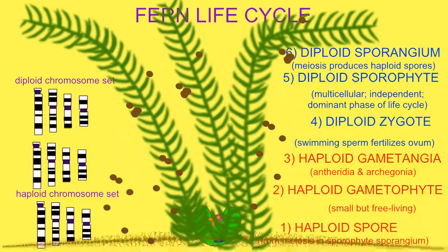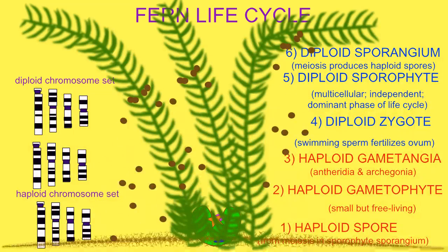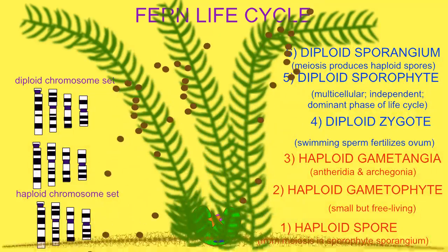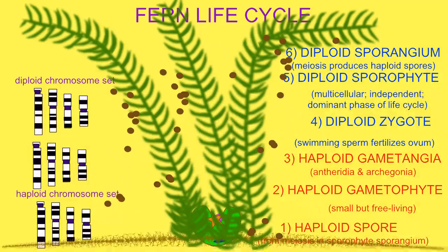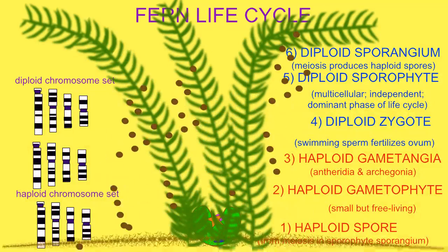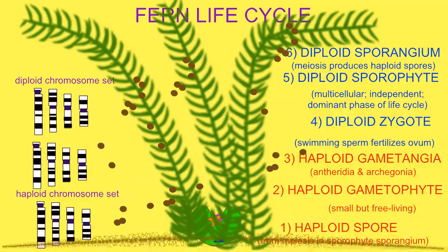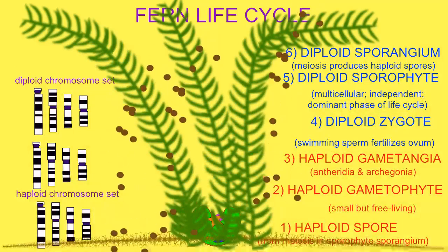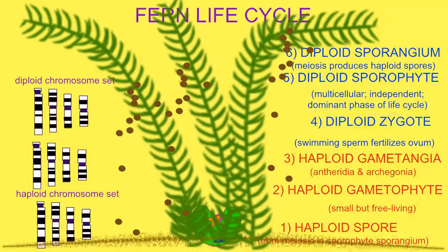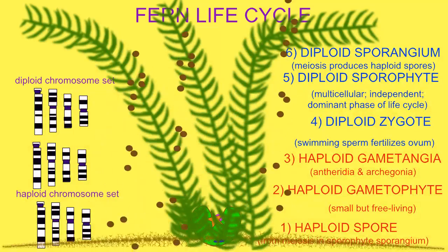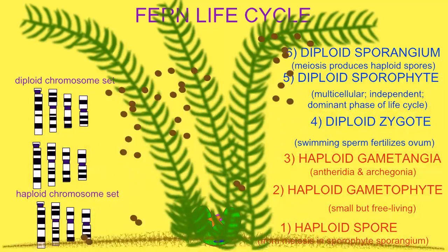The sporophyte leaves produce sporangia. These can vary in their position, typically on the back of the leaves, but they can be located in the middle of the leaves in non-photosynthetic regions, or on their own leaves dedicated to the production of sporangia. Meiosis occurs inside the sporangia to produce haploid spores, which will give rise to another haploid generation.